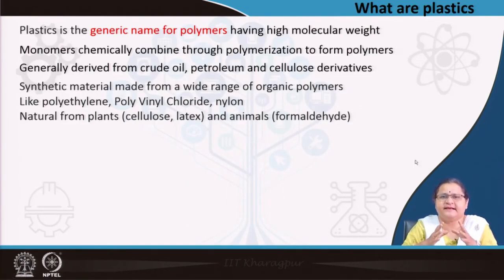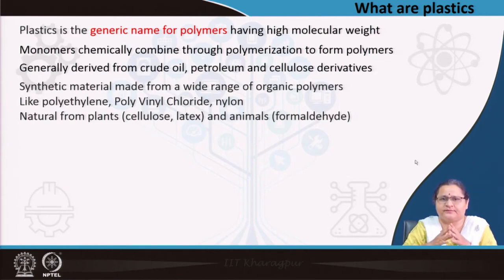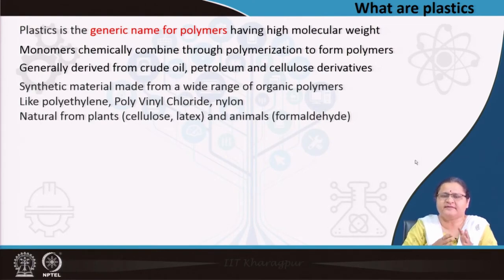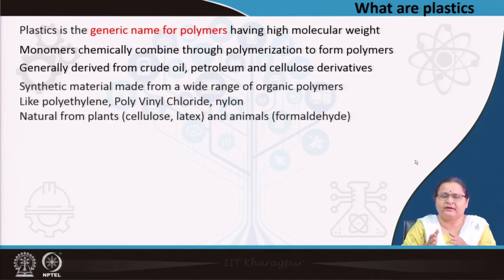What are plastics? Plastic is the generic name for polymers having high molecular weight. What is a polymer? Polymers are formed from monomers — 'mono' means single — which chemically combine by the process of polymerization to form polymers. The names mentioned in the previous slide are actually the monomers, which give the name to the polymers.